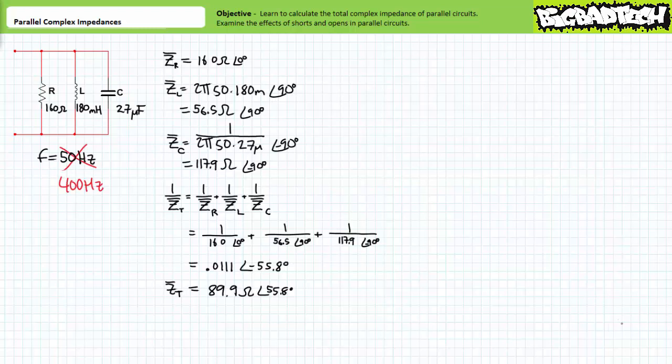Consider what would happen if we raised excitation frequency to 400 hertz. Which reactive element's nature would now dominate this circuit? You should be able to predict this effect with a simple mental exercise. Given resistors are essentially immune to the effects of frequency, we could expect its contribution to remain unchanged. The magnitude of the inductive complex impedance is directly proportional to excitation frequency, so we should expect its magnitude to increase. The magnitude of the capacitive complex impedance in contrast is inversely proportional to excitation frequency, so we should expect its magnitude to decrease. Given the element with the smallest magnitude would dictate the nature of this parallel relationship, we should expect the capacitor to steal the show at 400 hertz.